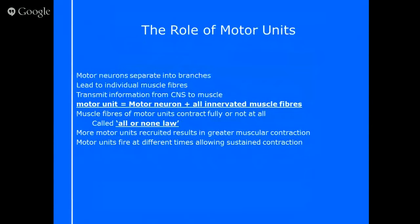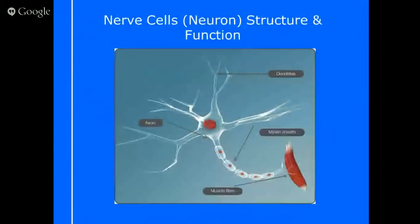A motor unit is essentially a motor neuron and all of the muscle fibres that it innervates. Looking at the previous image, you can see the motor neuron zoomed in on a whole muscle body with lots of different branches, innervating lots of chunks of muscle fibres. This motor neuron with its muscle fibres makes up a big motor unit because it's activating lots of muscle fibres, whereas some will just innervate one or two muscle fibres and that will be a smaller motor unit.